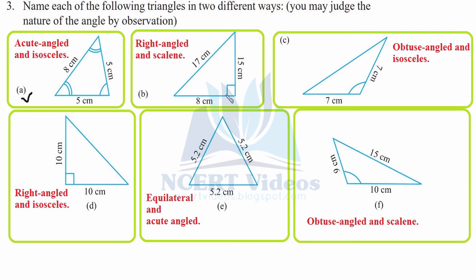Part b: The right angle is clearly visible, represented by a square box, so it is right angled. All the sides are different — 15, 17, and 8 centimeter — therefore it is scalene. So part b is right angled and scalene.